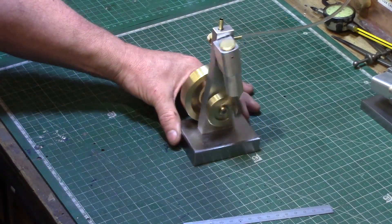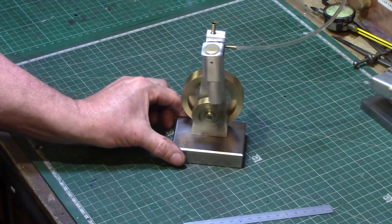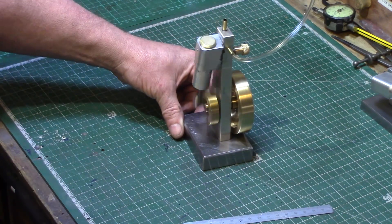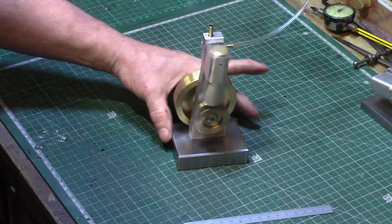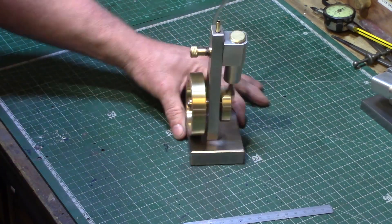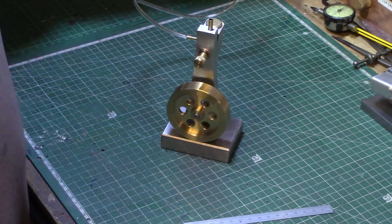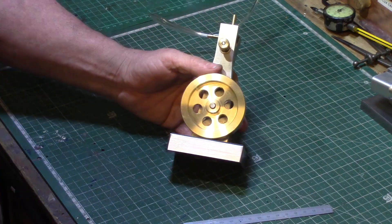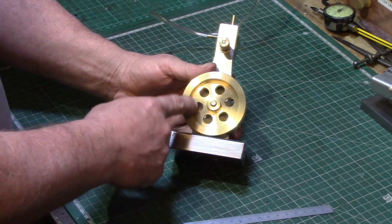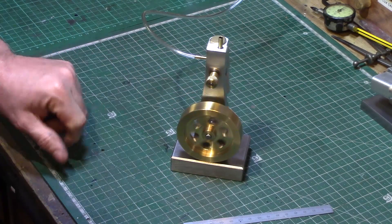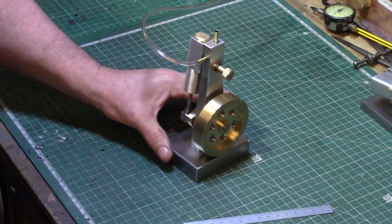You may have already seen my original video on this little wigwag wobbler engine that I've built. I just wanted to do an update video because I've done a couple of changes. The first change is I've machined six holes in the flywheel, which is just for decor purposes really, no other reason.